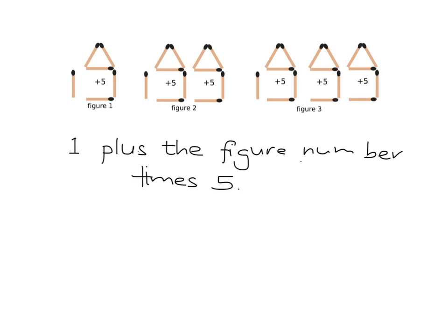And so we developed a general rule which we could put into words, which is that for figure, whatever figure you're at, you must take 1 and then plus the figure number, whatever figure number you are at, multiplied by 5. And we can then translate that into our algebra because what we're saying is we take 1 and then we add, we plus the figure number. So we were going to look at figure number n. So it will be n and we multiply that by 5.